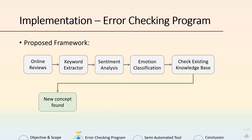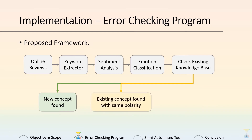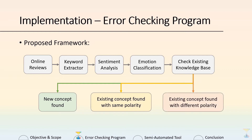There will be three possible outcomes from this check. First, a new concept is found — meaning it doesn't exist in the knowledge base, and we can structure it and add it to the existing knowledge base. Second, an existing concept is found with the same polarity, meaning the results match the knowledge base, so it's correct and no update is needed. In the last case, an existing concept is found with a different polarity, so the concept will be flagged for further checking to determine whether there is a need to update the existing knowledge base.